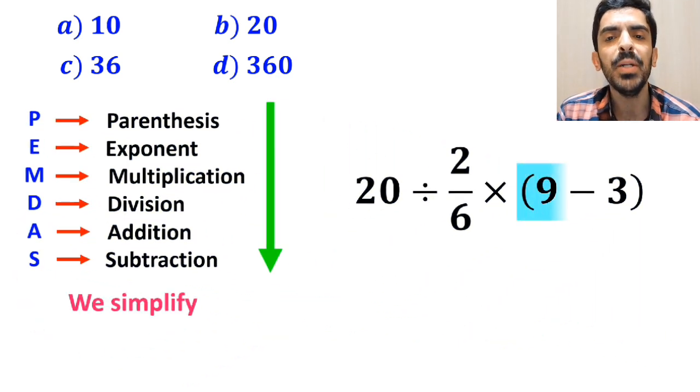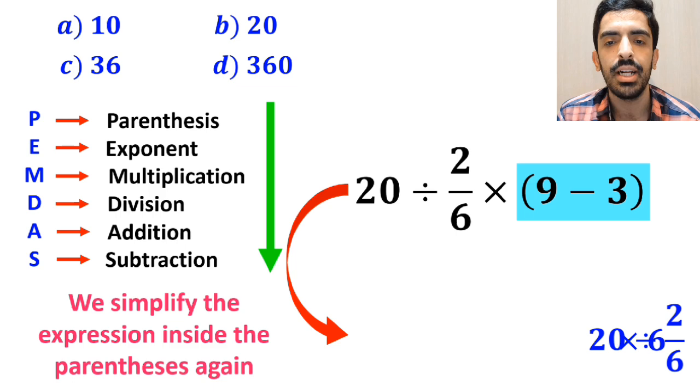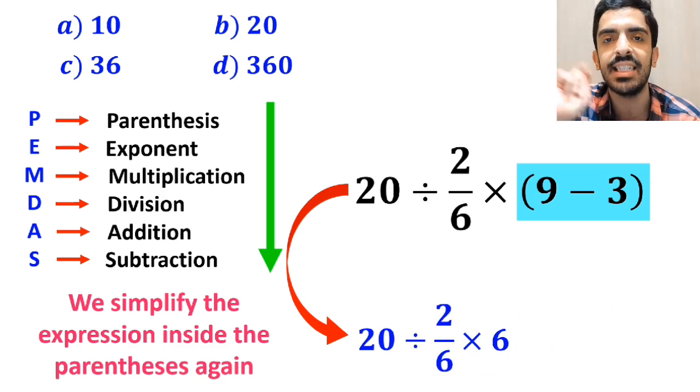And the next step, we simplify the expression inside the parenthesis again. And instead of this expression, we can write 20 divided by 2 over 6 times 6.